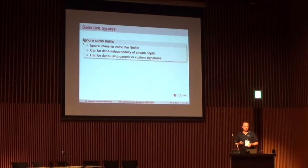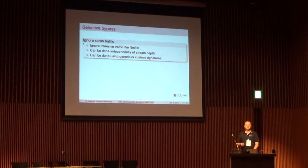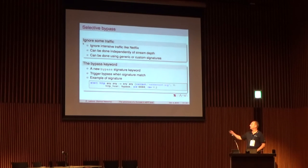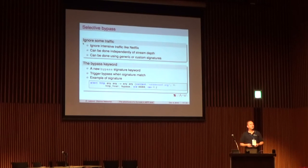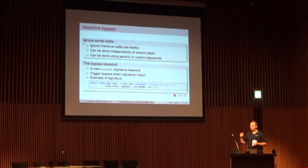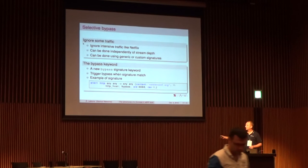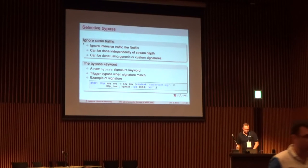Another interesting thing we can do is selective bypass. We can have a signature that says, for example, all traffic to netdevconf — I trust it. So I just want to bypass any exchange that matches the HTTP host name netdevconf.